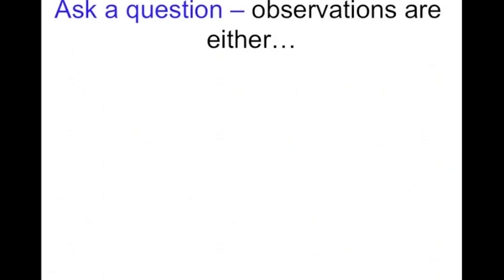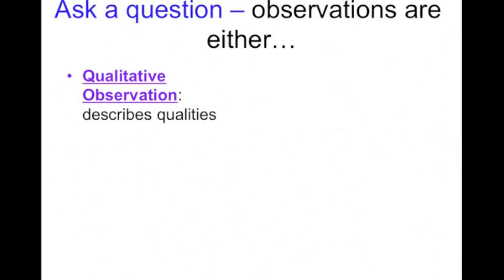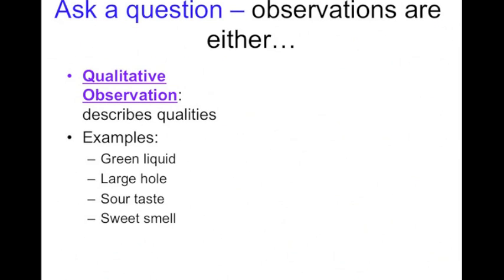Continuing with this ask a question part of scientific method, observations are always either qualitative or quantitative. Qualitative observations describe qualities. You can see the word quality is in qualitative. I also like to remember that there's an L, and when I think L in qualitative, I think of letters. So I think I'm going to be using letters, using words to describe something. Examples: a green liquid, a large hole, a sour taste, a sweet smell. Those are all observations using different senses, but they're all using descriptive words.